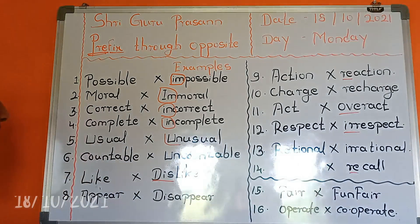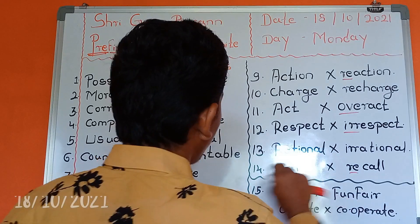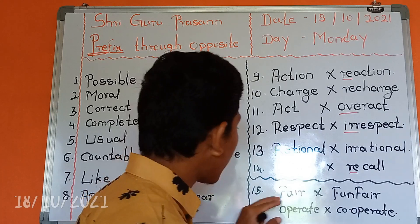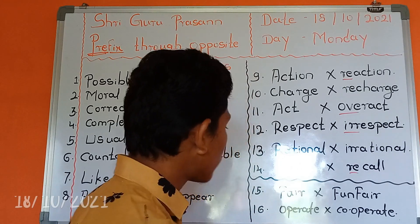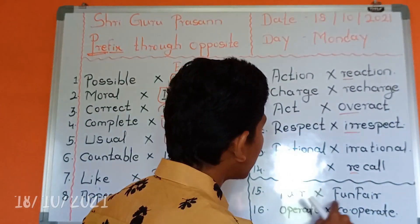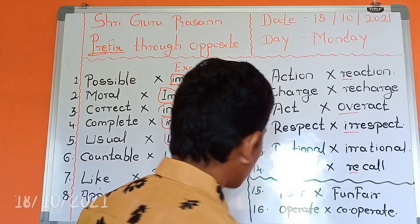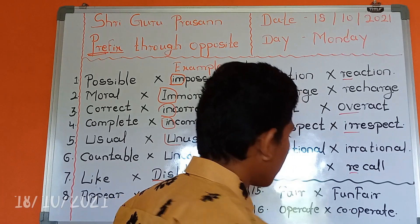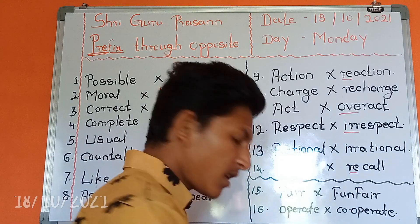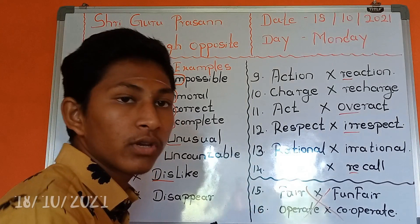I hope you understood. These 14 pairs are opposites formed with prefixes. However, two of the pairs I included are not opposites: 'fair' and 'funfair' are not opposites — 'fair' means a festival, and 'funfair' means the same. Similarly, 'operate' and 'cooperate' are not opposites — 'cooperate' means to help together. I included these to clarify your understanding, so please do not confuse those words with the opposite prefix examples.